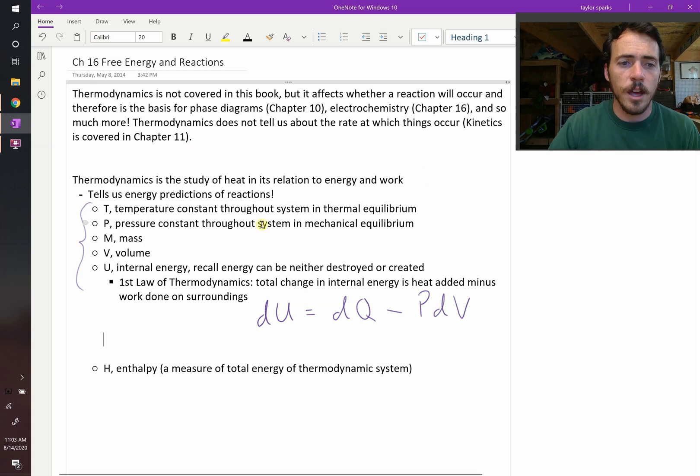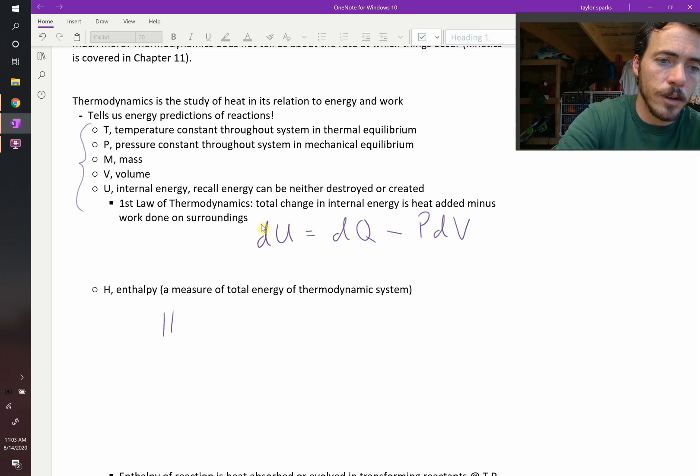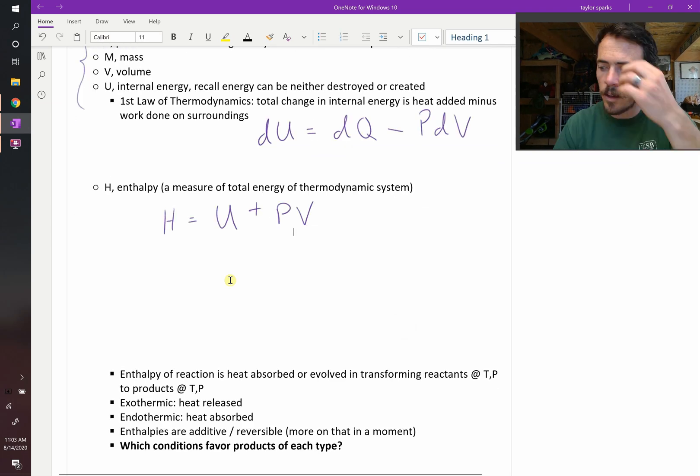Now we get to enthalpy. Enthalpy is a measure of the total energy of a thermodynamic system. So if it's the total energy, then it has to be the internal energy plus the work it's doing on its surroundings. So H is going to be equal to our enthalpy, it's going to be equal to U, the same U as our internal energy from before, but it's going to be plus P times V. That is our enthalpy.